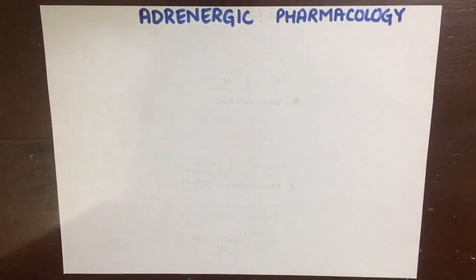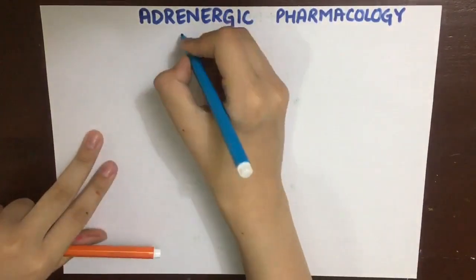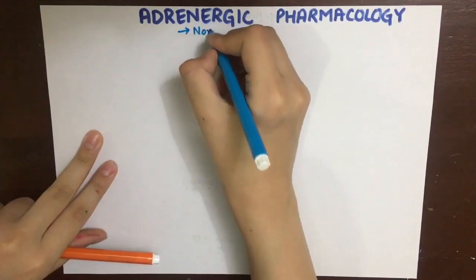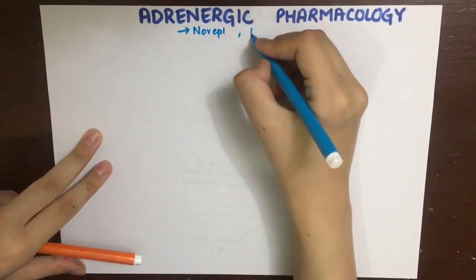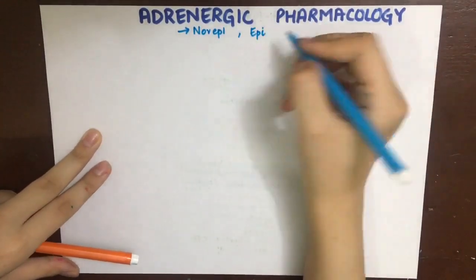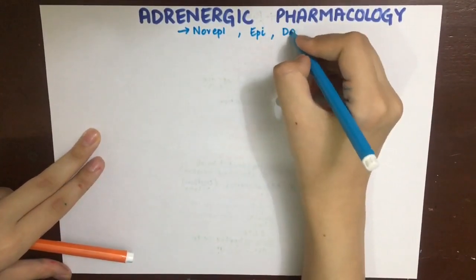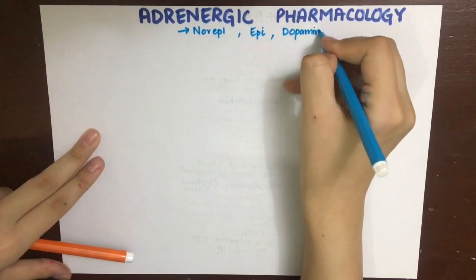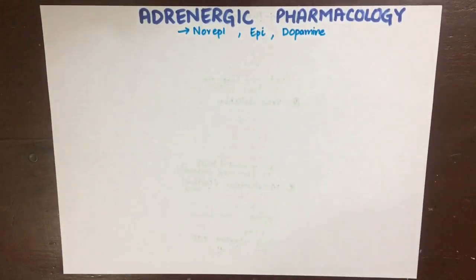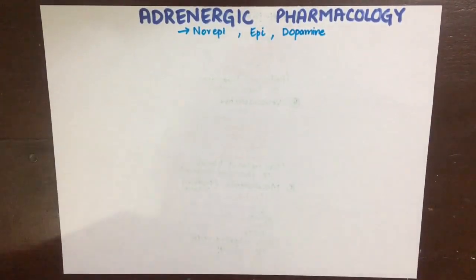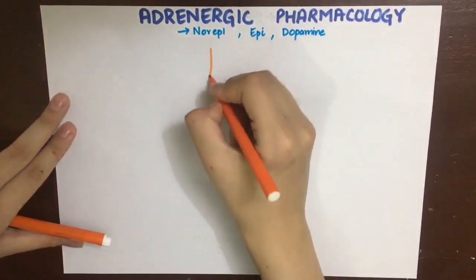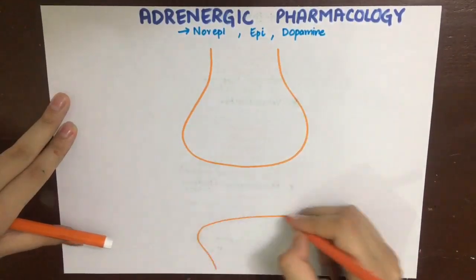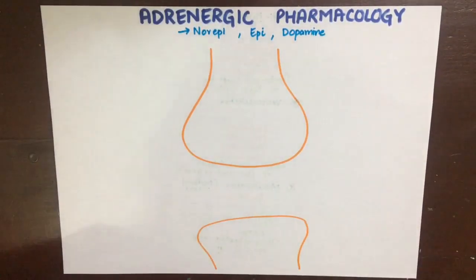We will now look at adrenergic pharmacology. The chief neurotransmitter in the sympathetic nervous system is norepinephrine. There is also epinephrine released into the blood and peripheral dopamine. Before looking at the drugs, we'll first see how norepinephrine is synthesized and released at the nerve terminal.